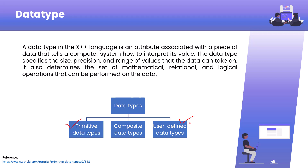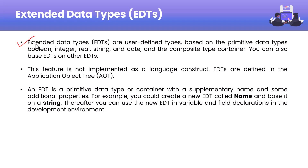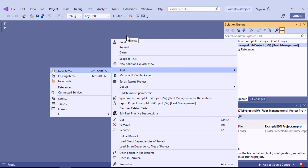As you can see in this slide, the first point says that extended data types, or EDTs, are user-defined data types based on primitive data types — for example, boolean, integer, real, string, and dates. It also uses the composite data type container. You can also use base EDTs on other EDTs. To create an extended data type, we take the help of primitive data types, composite data types, and sometimes create EDTs based on EDTs that are already present.